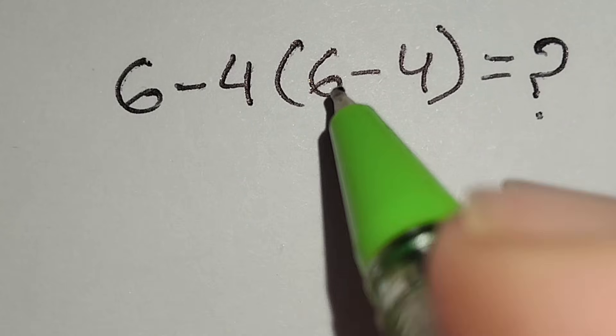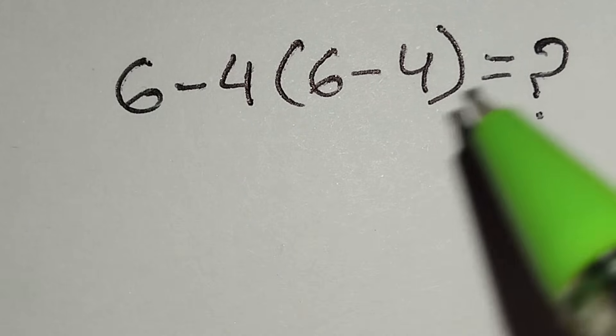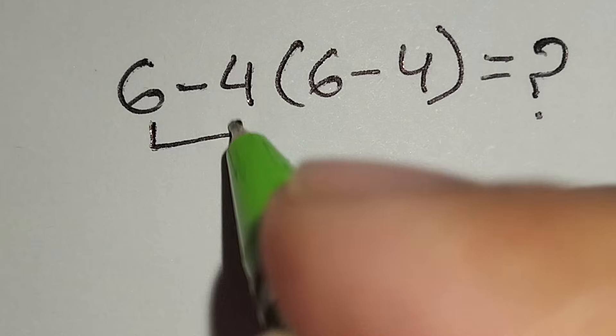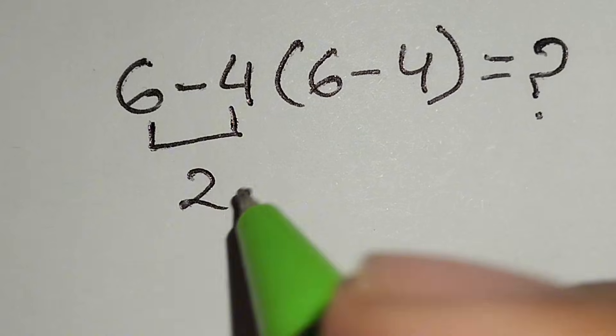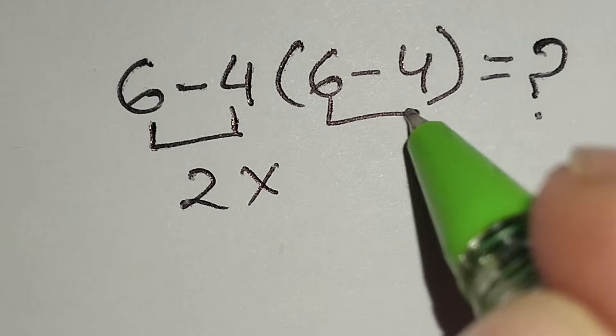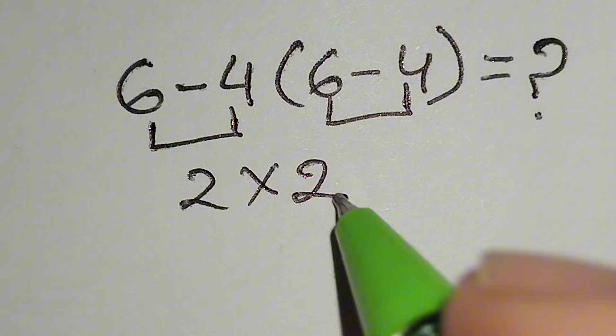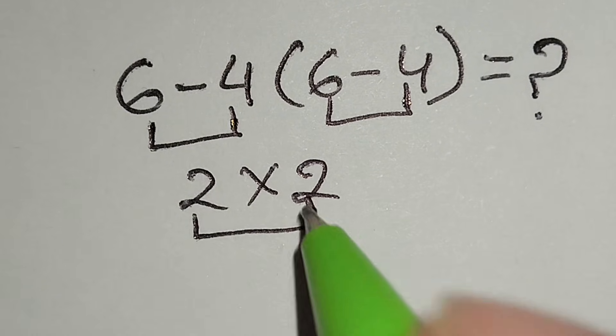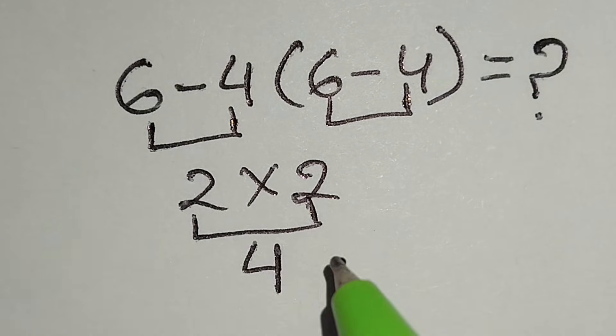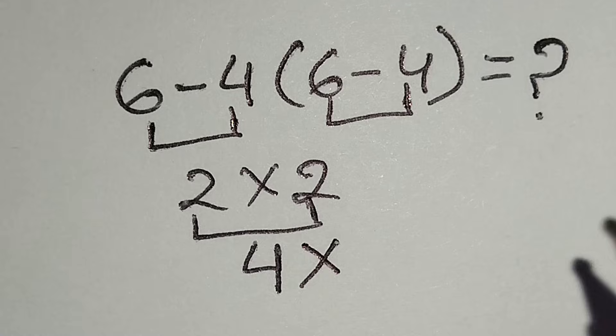6 minus 4 bracket 6 minus 4 is equal to what? Here 6 minus 4 gives us 2, multiply by 6 minus 4 gives us 2. 2 times 2 gives us 4. But this answer is not correct.